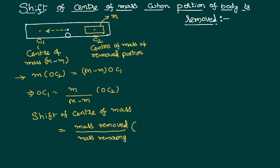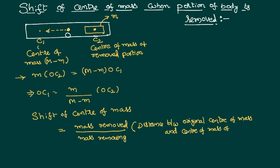And OC2 — if you look at the diagram — O is the center of mass of the original system and C2 is the center of mass of the removed portion. Therefore, OC2 is the distance between the original center of mass of the system and the center of mass of the removed portion. Using this formula, we can calculate the shift of the center of mass. We can simplify by calling the shift d, where d is the distance between the original center of mass of the system and the center of mass of the removed portion.